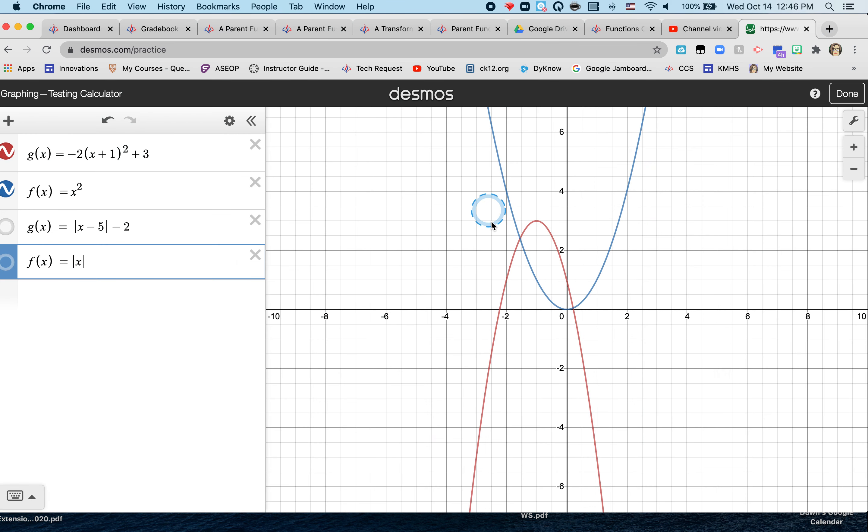Remember it can open up or open down. Now looking at how the red graph moves from the blue graph. So looking at my vertices, that's a good way to start. How does the vertex (0, 0) go over to (-1, 3)?